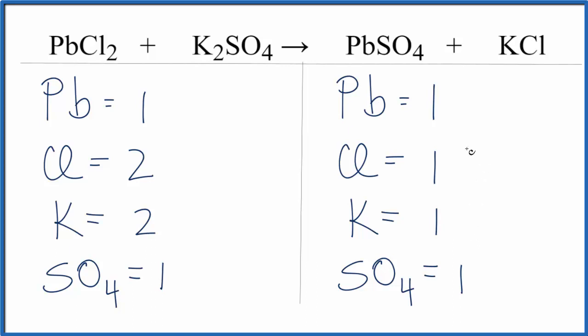So everything looks good except the Cls and the Ks. That's kind of convenient because I need to have two Cls here and two Ks here.